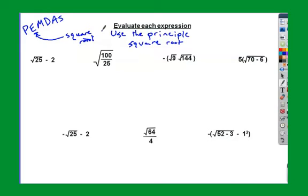Let's take a look at a couple examples. We're going to look at the square root of 25 minus 2. I have two operations: a square root and subtraction. Subtraction comes after exponents. So I'm going to take the square root of 25, that's 5, and I'll subtract 2, and 5 minus 2 is 3.